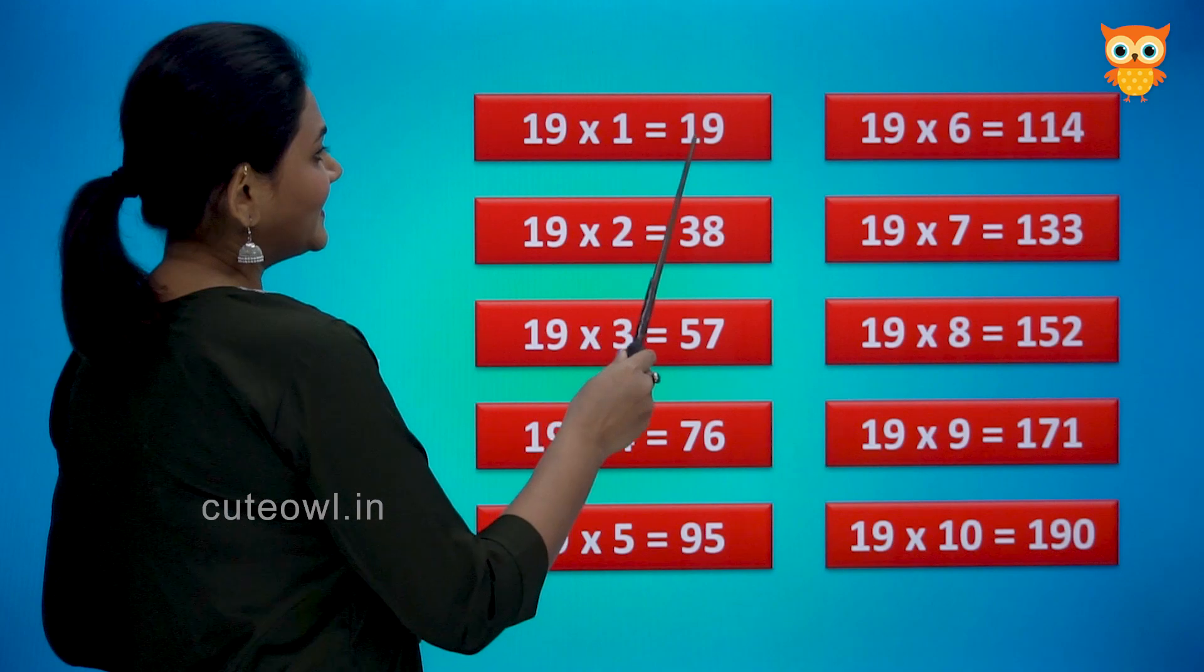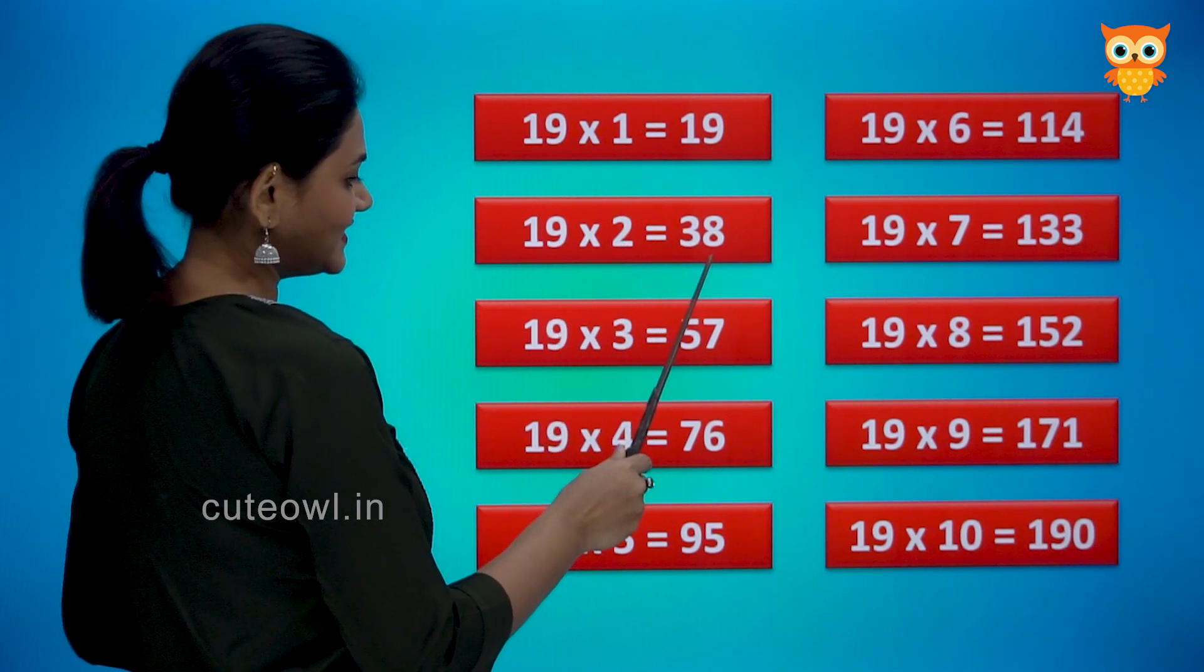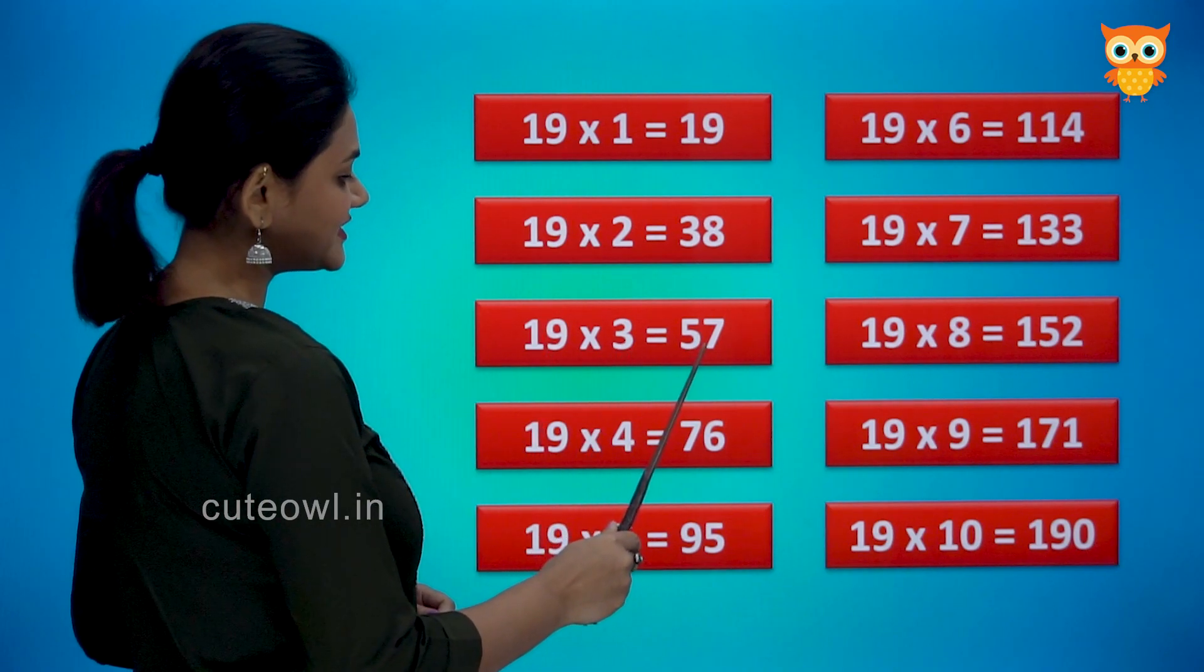19 ones are 19. 19 twos are 38. 19 threes are 57.